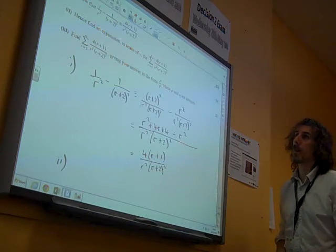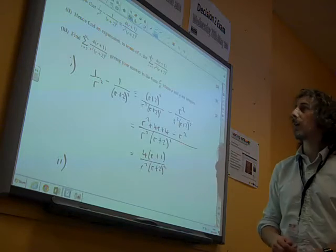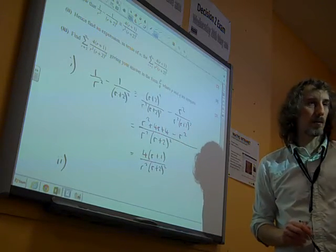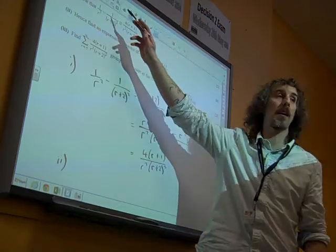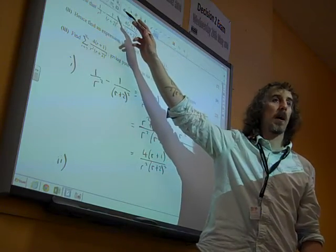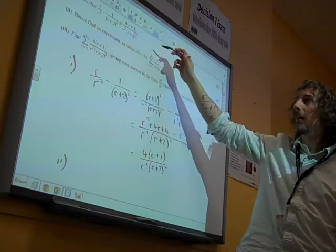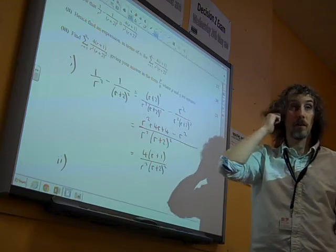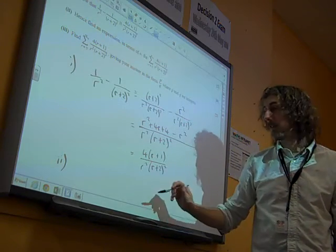Find an expression in terms of n for this thing here. Well, you correctly spotted that whenever we get this kind of two fractions combining to one single term, and then we do a series involving it, it's the method of differences stuff.